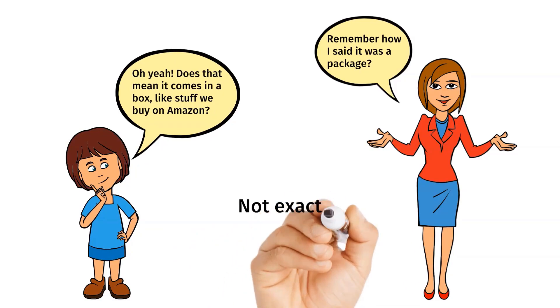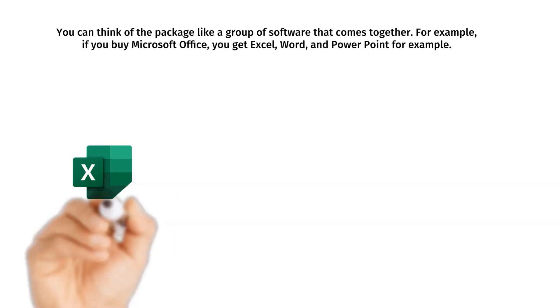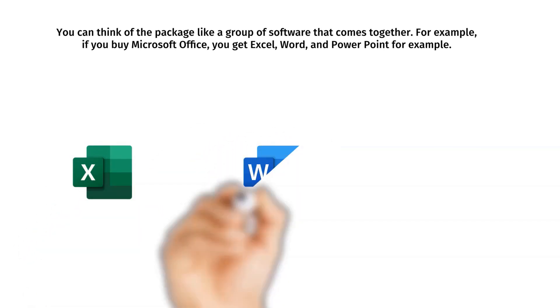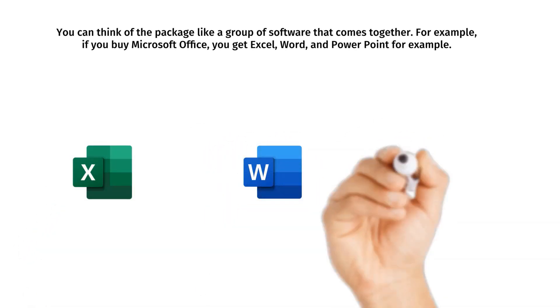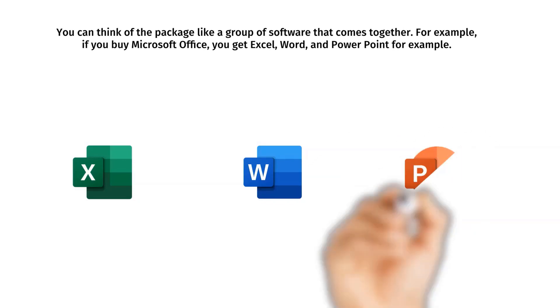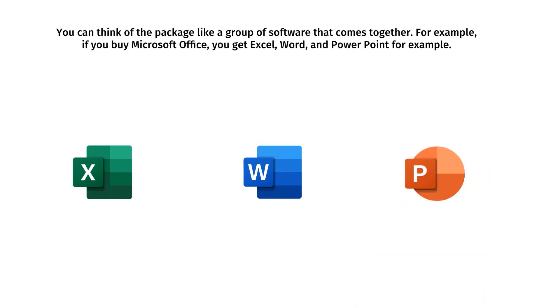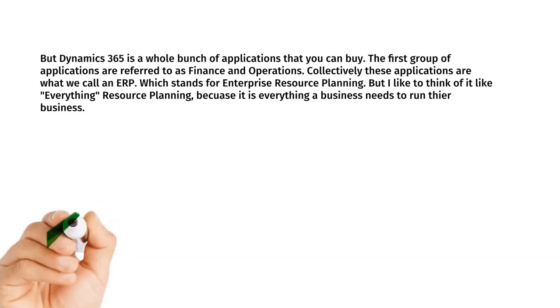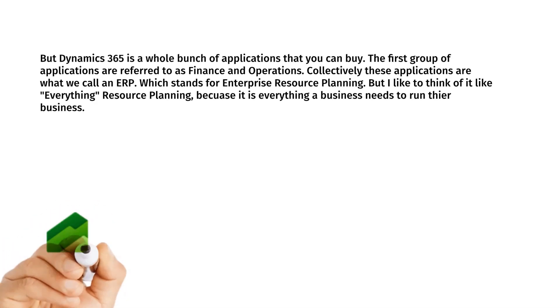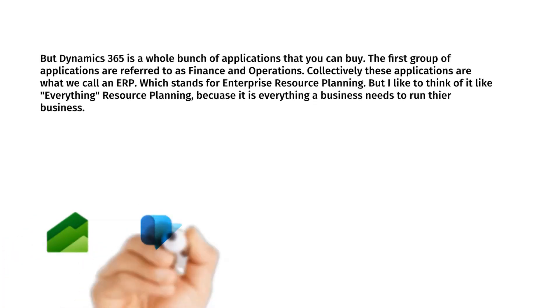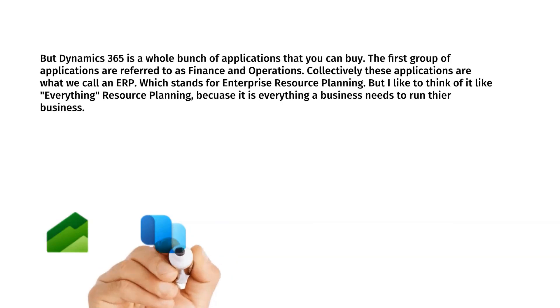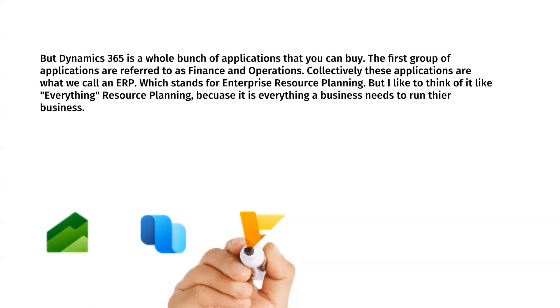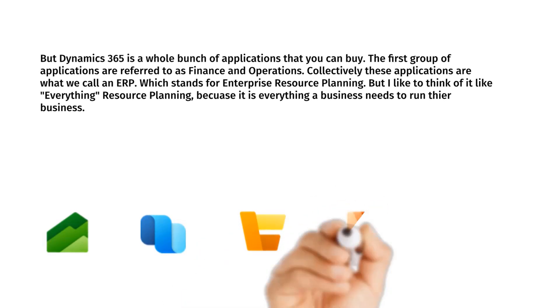You can think of the package like a group of software that comes together. For example, if you buy Office you get Excel, Word, and PowerPoint. But Dynamics 365 is a whole bunch of applications that you can buy. The first group of applications is referred to as Finance and Operations.